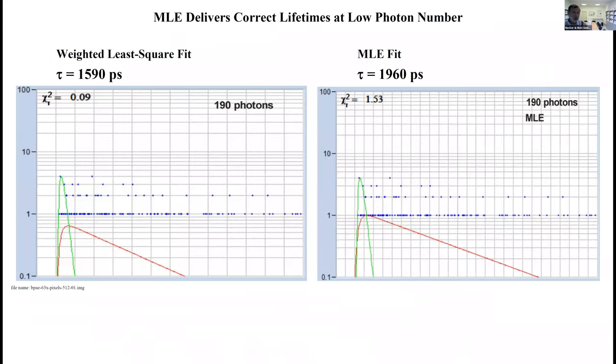Here's an example. Fluorescence decay with low photon number. This doesn't really look like a fluorescence decay, more like one photon or no photon. Least square fit delivers 1590 picoseconds. The correct value obtained by maximum likelihood estimation is 1960 picoseconds, so much better. We have solved the problem of low photon number.